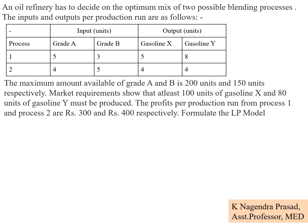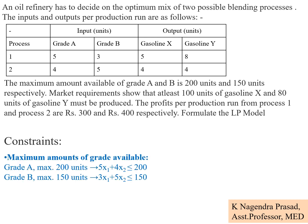Next, look for the constraints by observing the data. For grade A, the maximum available is 200 units. Process 1 uses 5 units of grade A per run and process 2 uses 4 units. So the constraint for grade A is: 5x1 + 4x2 ≤ 200.